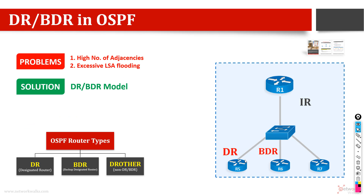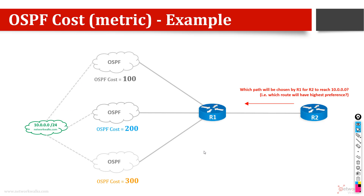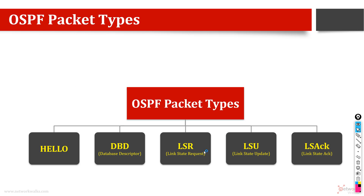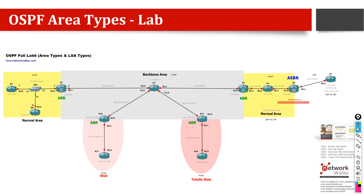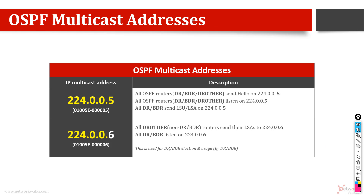DR and BDR solve two types of problems: they reduce the number of adjacencies and reduce link state advertisement flooding. This is a detailed topic with a dedicated short video. Remember, two multicast addresses is a very important point for interviews — you need to remember which routers use which multicast address.